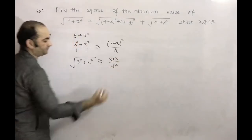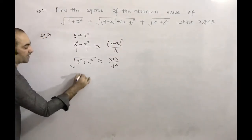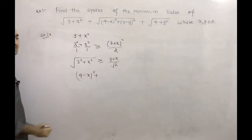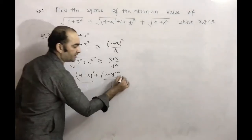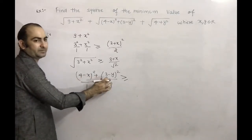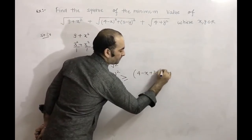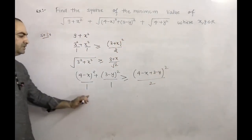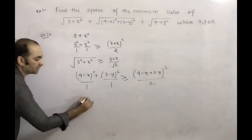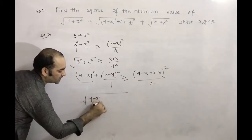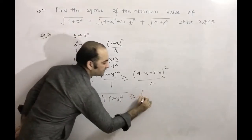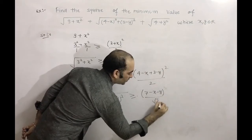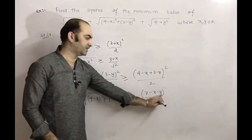Similarly, for √((4-x)²+(3-y)²), we apply T2's inequality: ((4-x)²+(3-y)²)(1+1) ≥ (4-x+3-y)². Taking the square root, √((4-x)²+(3-y)²) ≥ (7-x-y)/√2.